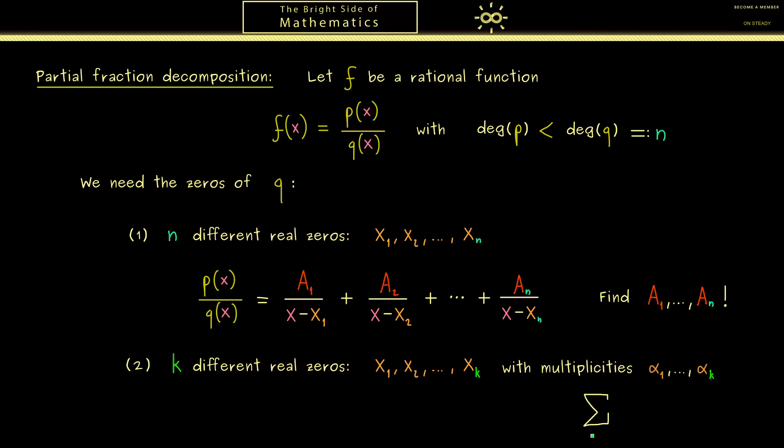Moreover you also know the sum of the multiplicities can't be greater than n. Indeed in this case we want that the sum is exactly n. In other words this means in this case the polynomial q does not have any strict complex zeros. Hence as in the first case we only have real zeros.